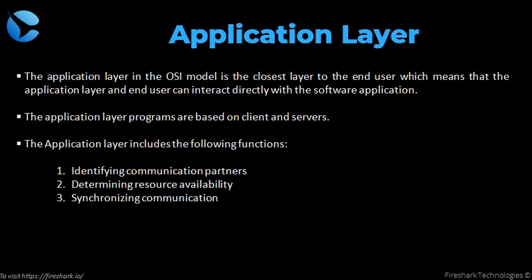Identifying communication partners: the application layer identifies the availability of communication partners for an application with data to transmit. Determining resource availability: the application layer determines whether sufficient network resources are available for the requested communication. Synchronization: all communications between applications require cooperation, which is managed by the application layer.